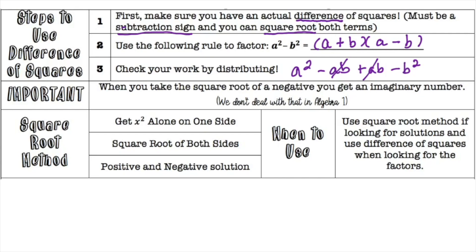For the square root method: if you have an x squared on its own, all you have to do is take the square root of both sides and you get your answer. You have both a positive and a negative answer, because if you take the square root of something it could also be a negative. For example, with 64, negative 8 times negative 8 gives you 64, and 8 times 8 gives you 64. So you write your answer as plus or minus that value. We use the square root method when looking for solutions, and difference of squares when looking for factors.